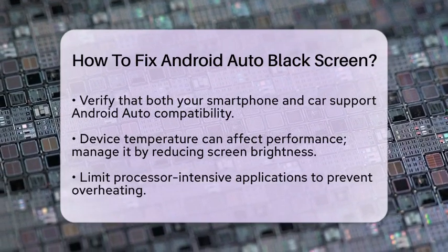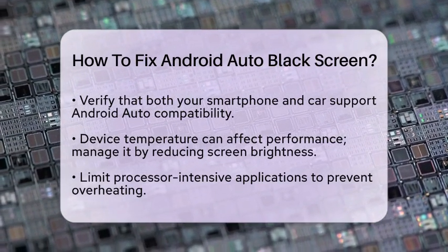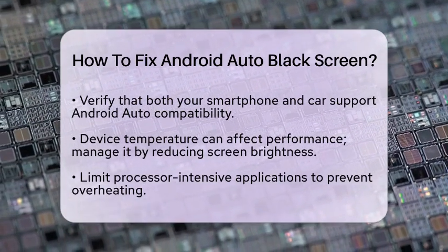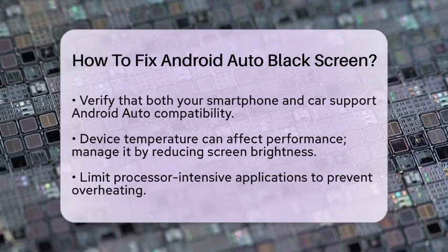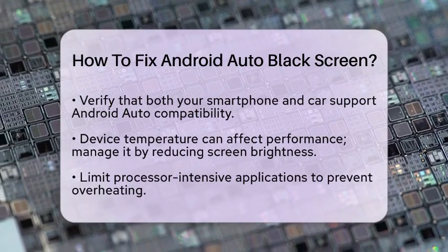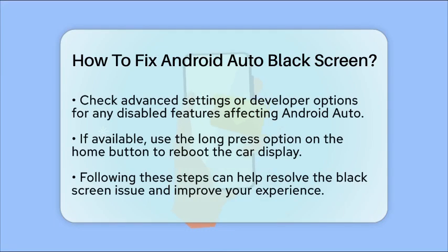Device temperature can play a role too. If your phone gets too hot, it may lead to a black screen. To manage this, reduce the screen brightness and limit the use of processor-intensive applications. If you have access to a cooling pad, consider using it to keep your phone cool during use.